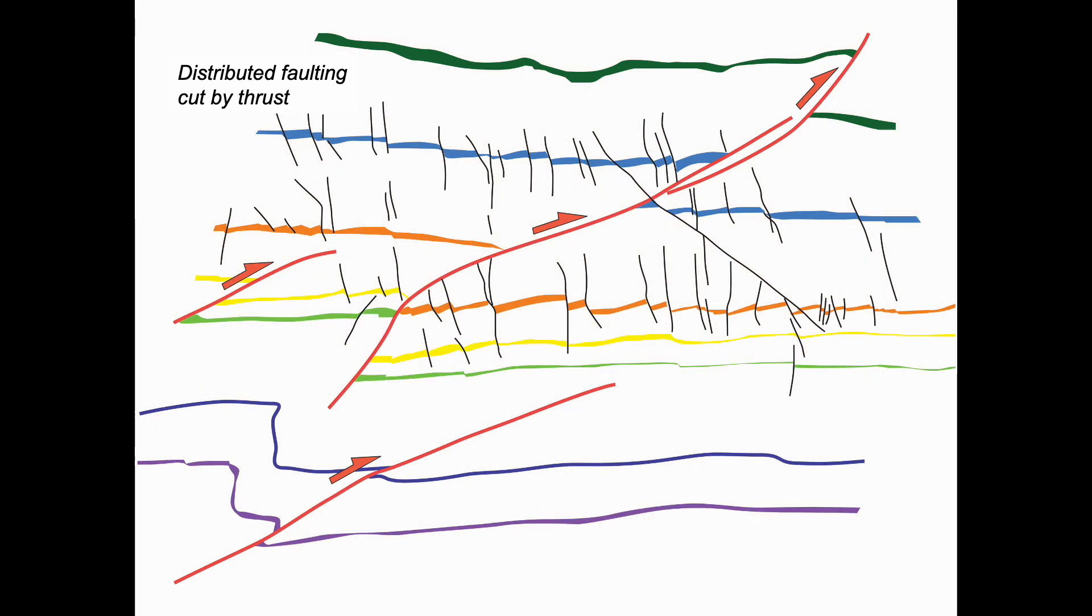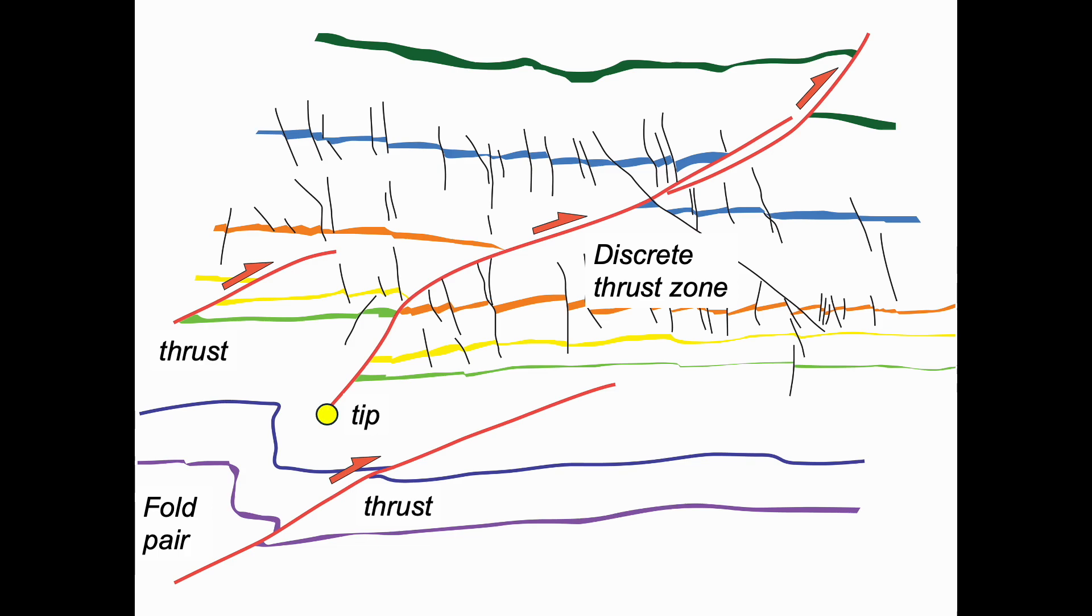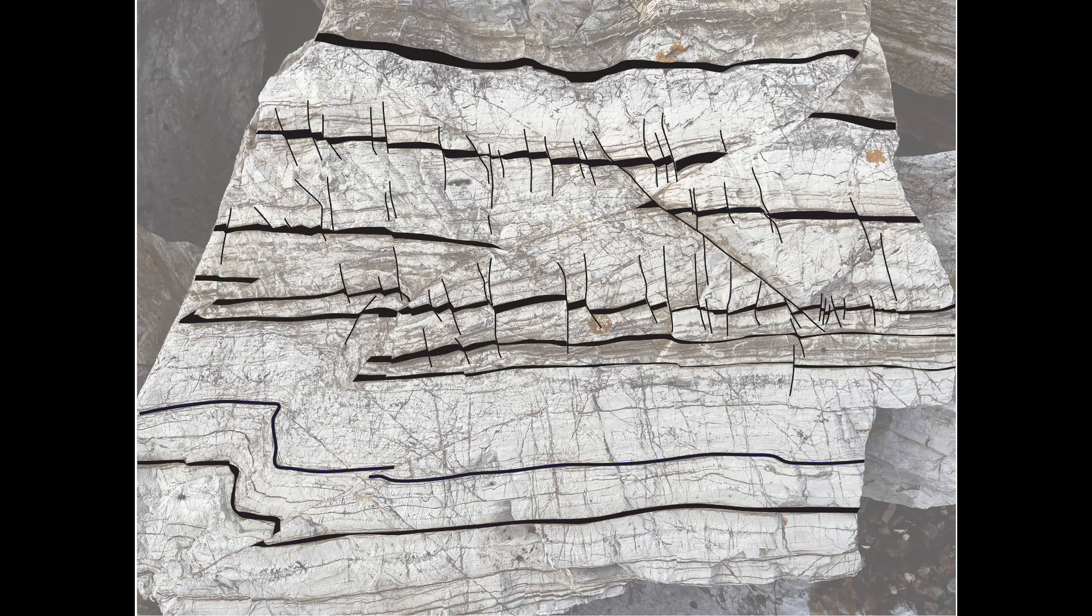We can fade out the rocks to just show the layering and faults. The thrust is narrow, discrete, but terminates downwards and passes into a fold pair, along with soft-link thrusts. So this is another great boulder for showing the complexity of natural fault systems.